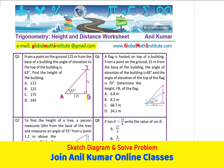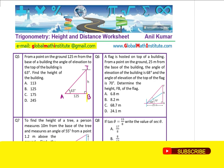Next question. A flag is hoisted on top of a building. From a point on the ground 25 meters from the base of the building, the angle of elevation to the building is 68 degrees. And the angle of elevation to the top of the flag is 70 degrees, right? Determine the height FB of the flag.